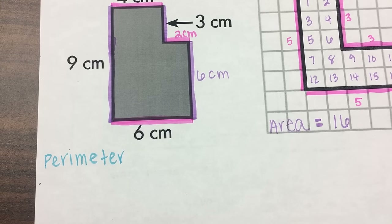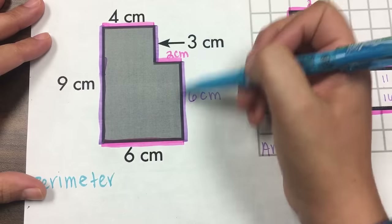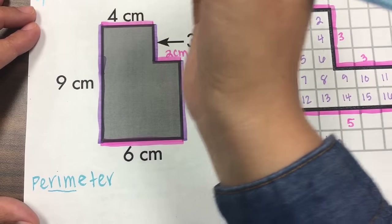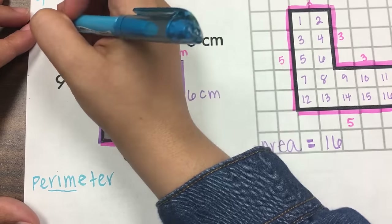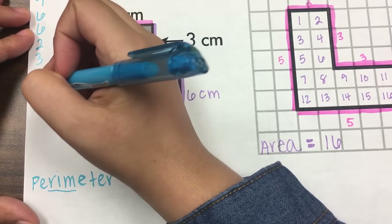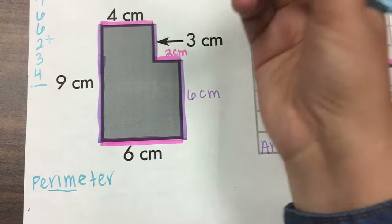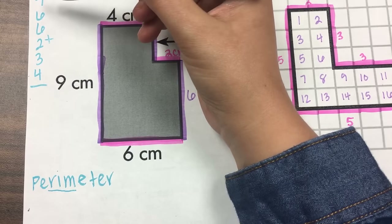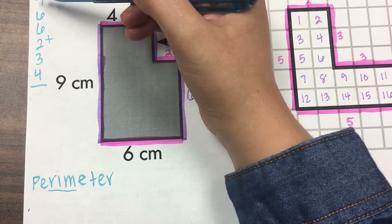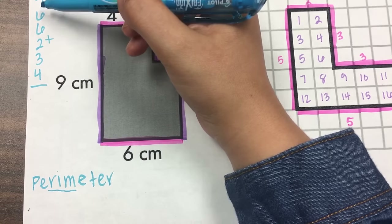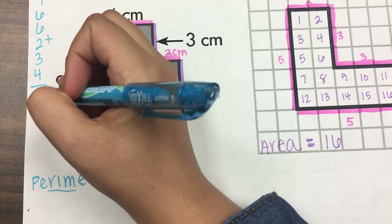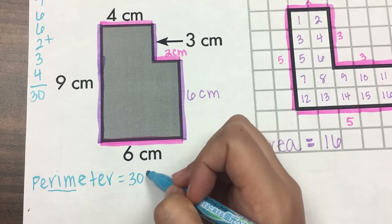Now remember, perimeter is all of the numbers on the outside — the rim. Think of the word rim. So we need to add 9 plus 6 plus 6 plus 2 plus 3 plus 4. So 6 plus 4 is 10, plus 9 is 19 — continuing the addition — plus 6 more is 30. So the perimeter would equal 30 centimeters.